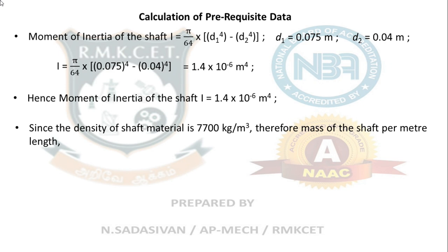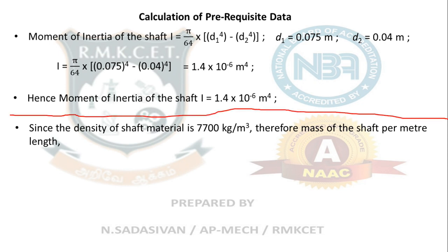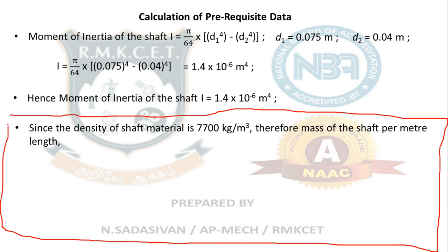Since density is given, I can calculate the mass per meter length of the shaft. In this calculation, L is always 1 meter — irrespective of the actual length given in the problem. This is because we are calculating mass per meter length. Whatever beam configuration or length is given in the problem, here L = 1.